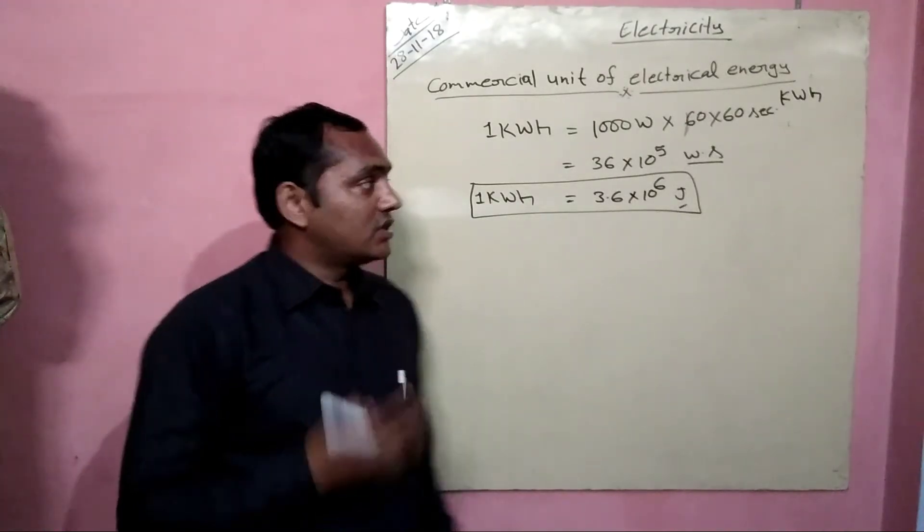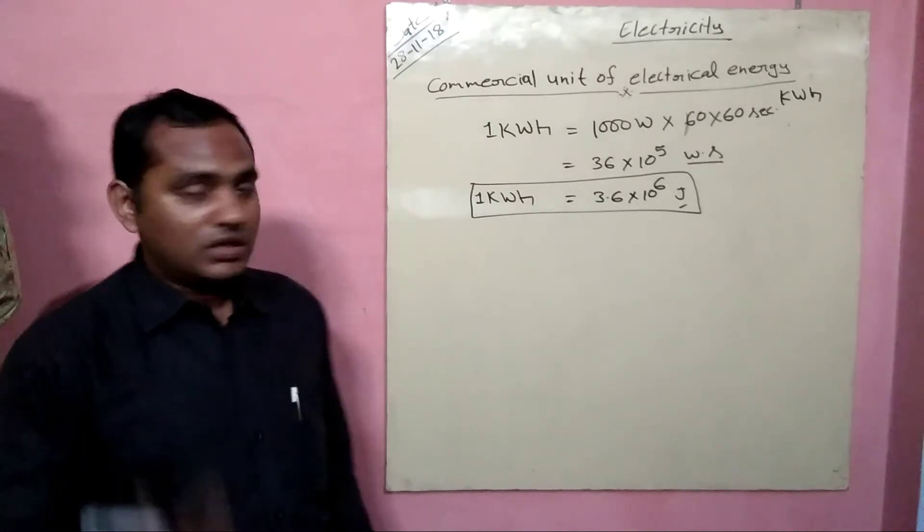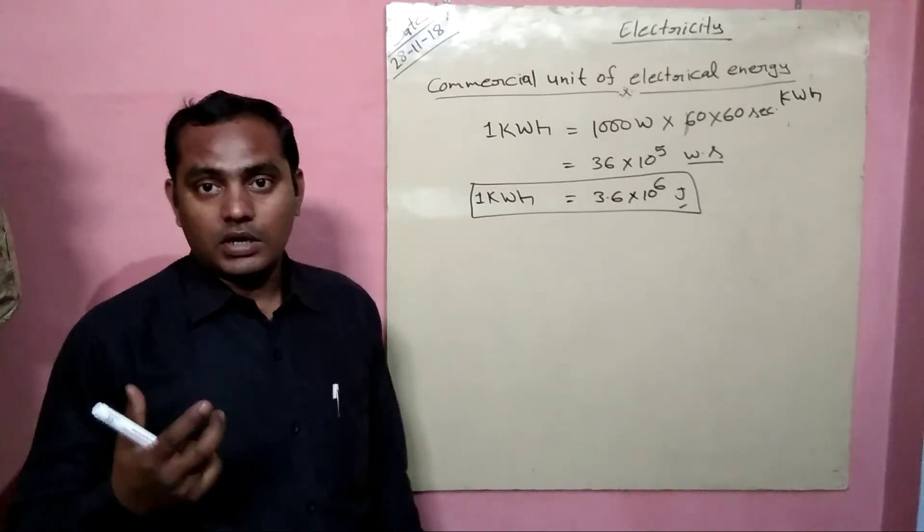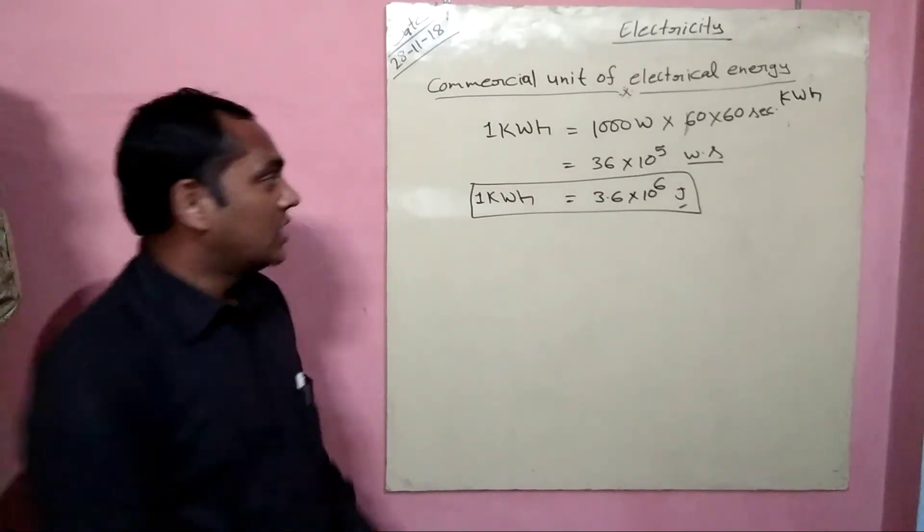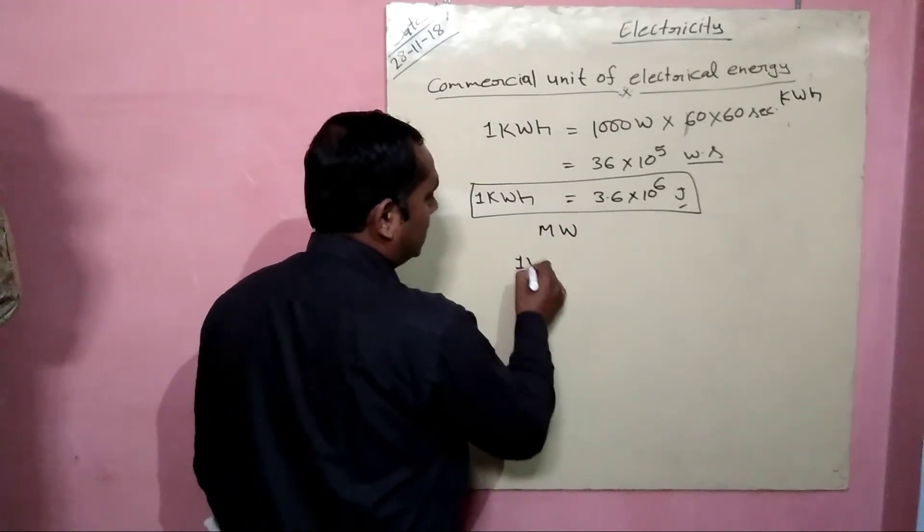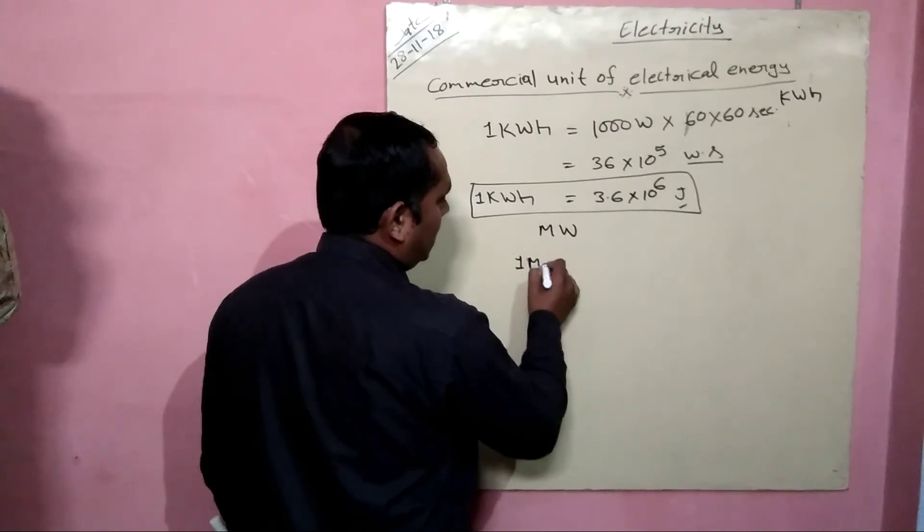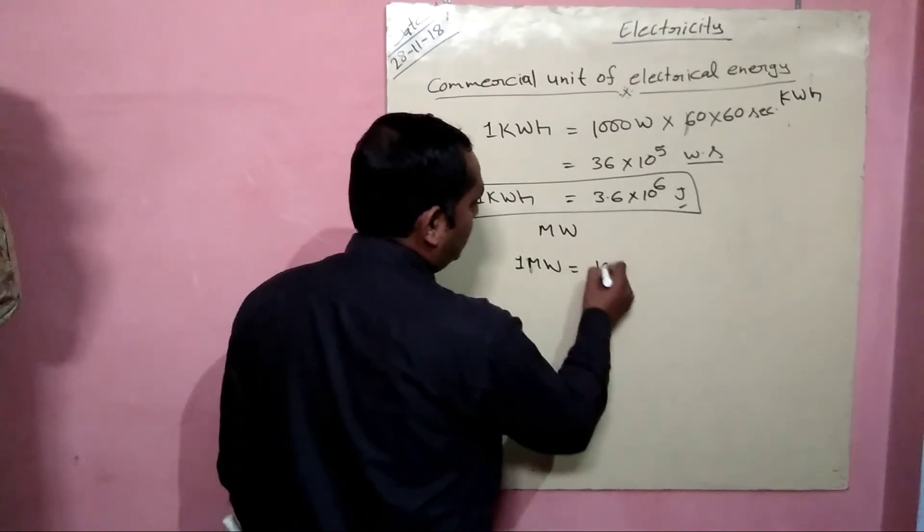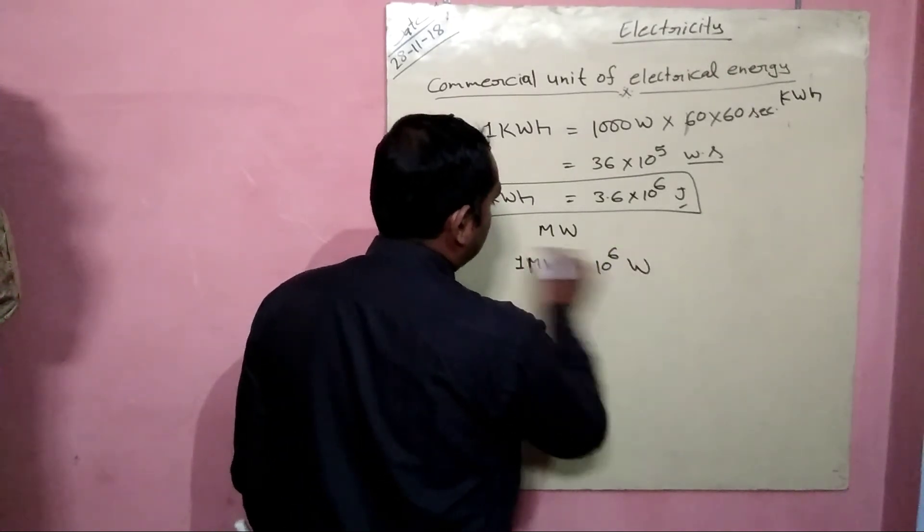Now for industrial purposes, another bigger unit is used, that is megawatt. One megawatt is equal to 10 to the power 6 watt.